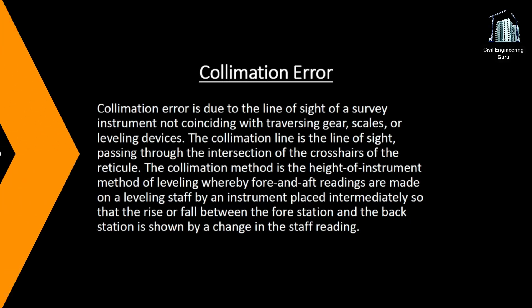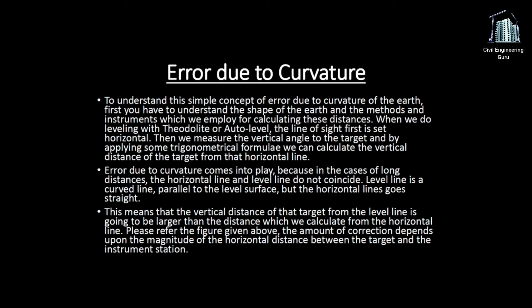To understand error due to curvature of the earth, you first have to understand the shape of the earth and the methods and instruments we employ for calculating distances. When we do leveling with the auto level, the line of sight is first set horizontal, then we measure the vertical angle to the target and by applying trigonometrical formulae we can calculate the vertical distance of the target from that horizontal line. Error due to curvature comes into play because in cases of long distances, the horizontal line and level line do not coincide — the level line is a curved line parallel to the level surface, but the horizontal line goes straight.